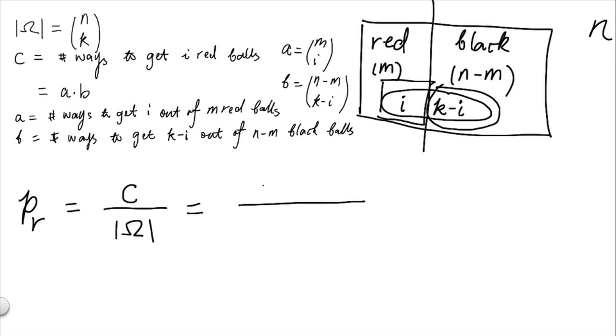From the previous calculations, we know that c is equal to a times b, which is then equal to m choose i times n minus m, choose k minus i. And on the denominator, we have the entire sample space is a size n choose k. And that completes our derivation.